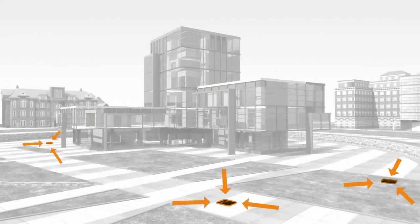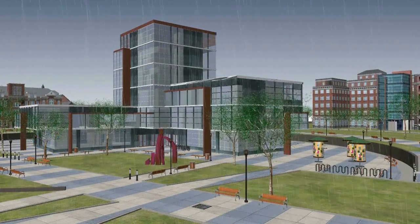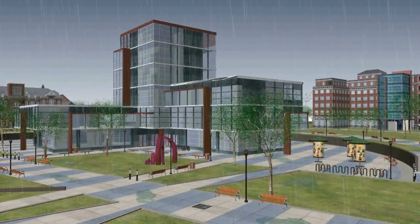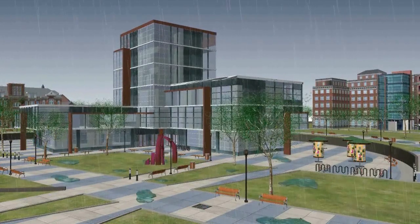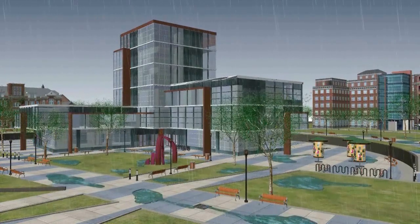Storm sewers and drains are ready to catch and pipe water away from the site and prevent flooding. During heavy rainfall, these materials, like concrete and sod, can only absorb so much water. The excess rainwater on the surface is funneled into the storm sewers.